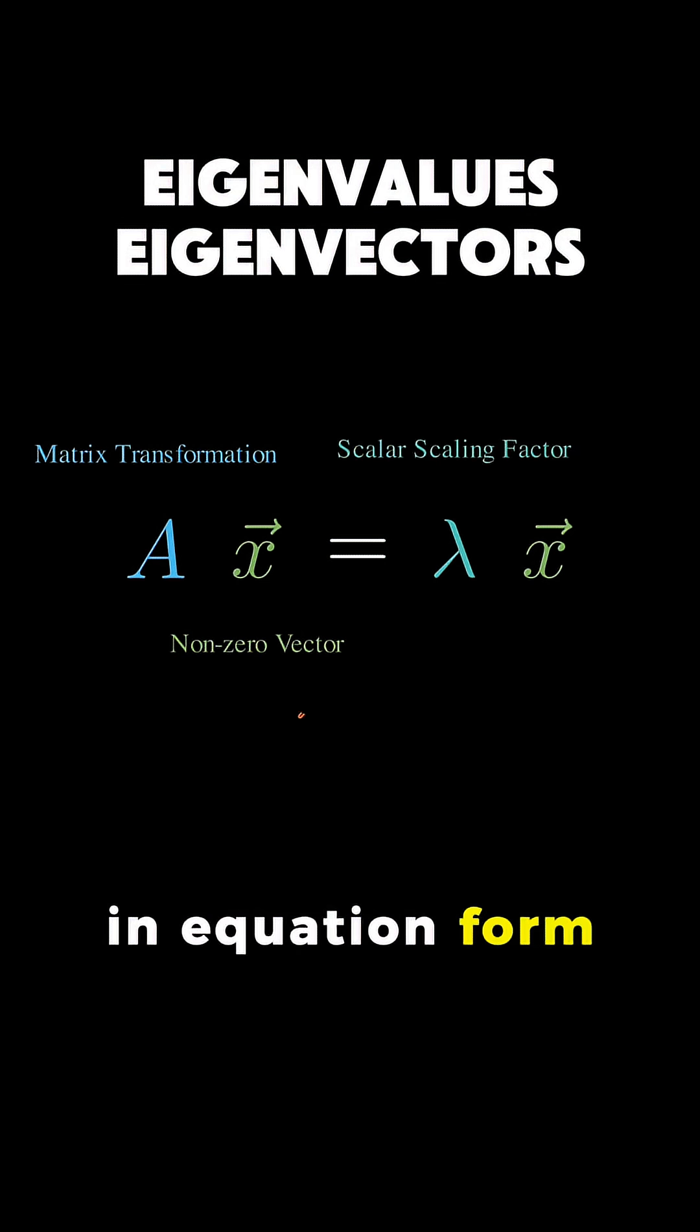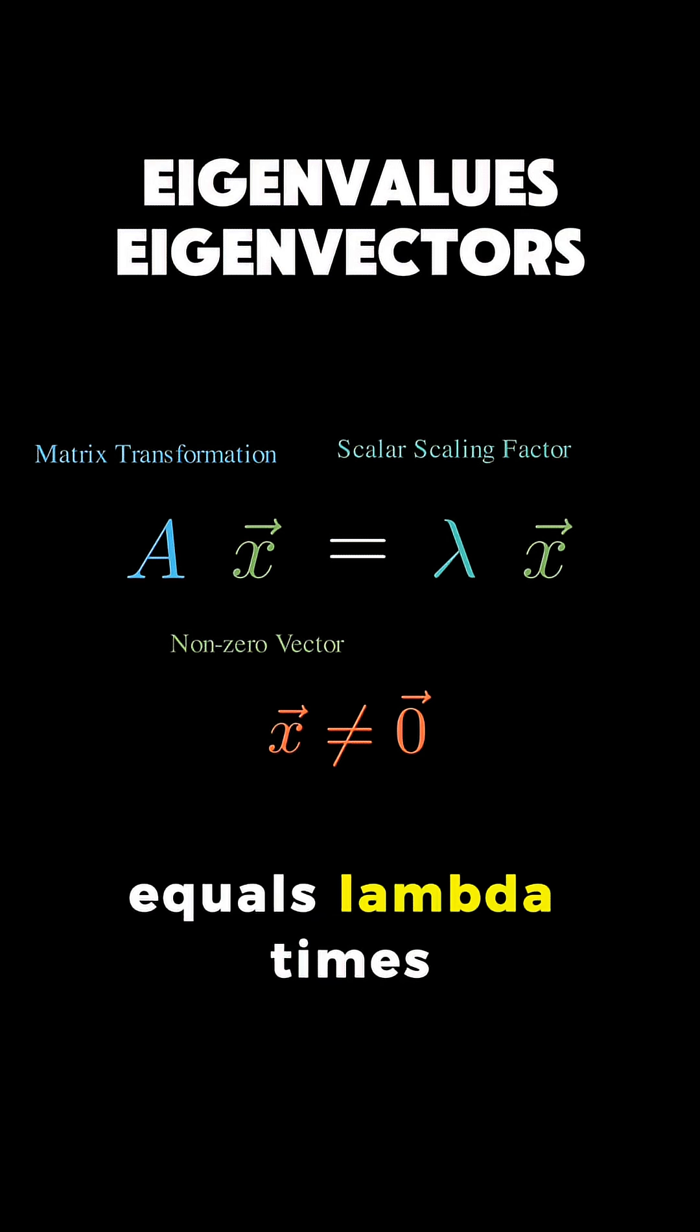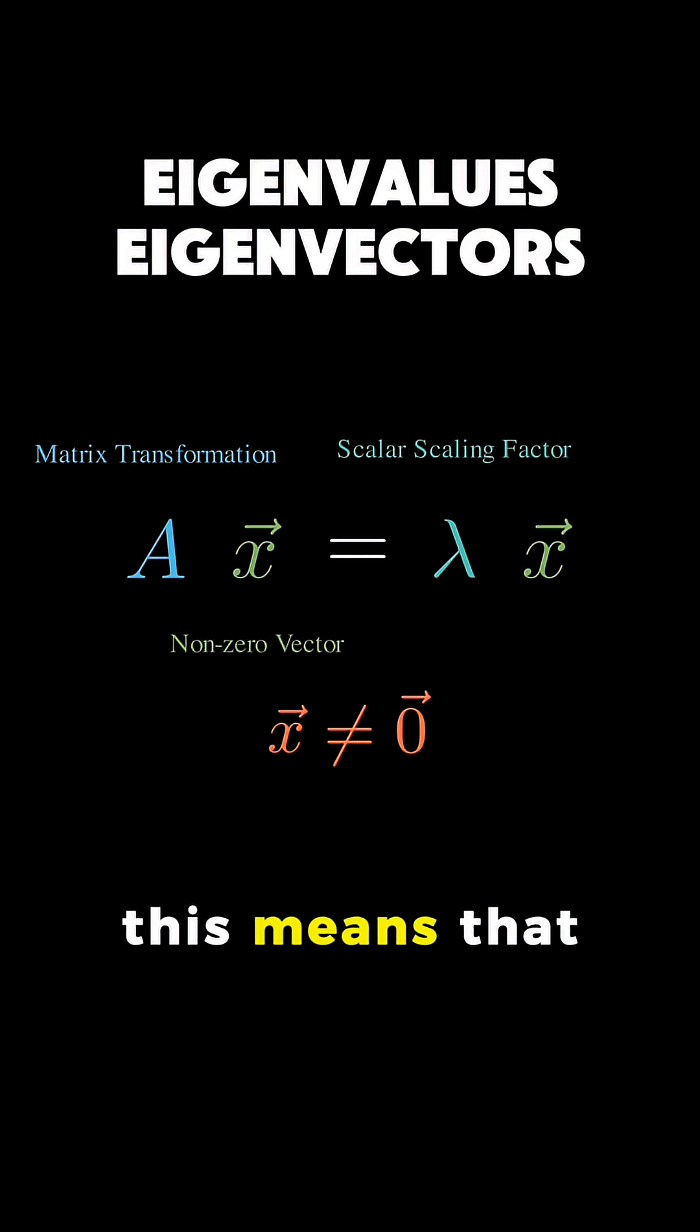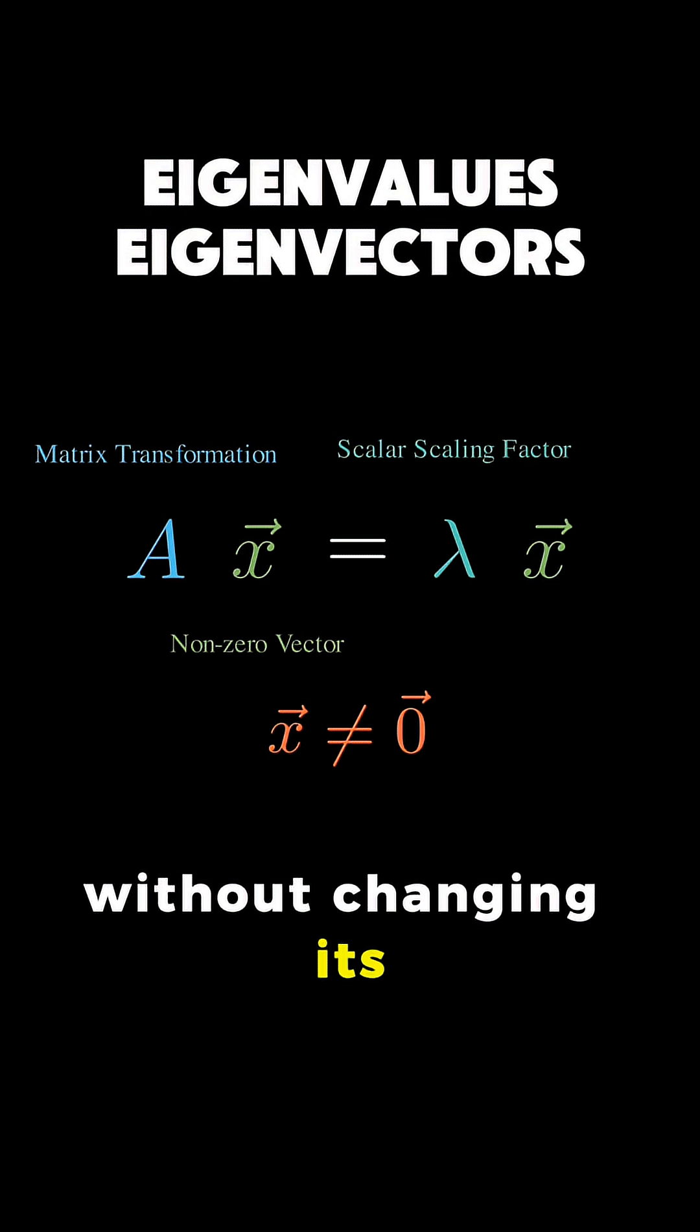In equation form, this is simply A times x equals lambda times x. This means that when the matrix A transforms the vector x, it only stretches or shrinks it without changing its direction.